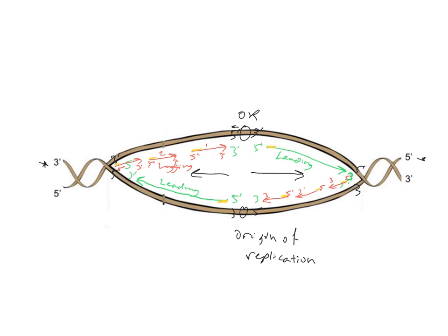Eventually, the RNA primers will be replaced with DNA. That replacement is carried out by DNA polymerase 1, which extends from the end of one Okazaki fragment and synthesizes through the primer, replacing it with DNA. This also connects the strands at the edge of the replication fork, leading to two completely linked strands. The last step is ligase, which links the final remaining nicks together, completing the full set of strands.